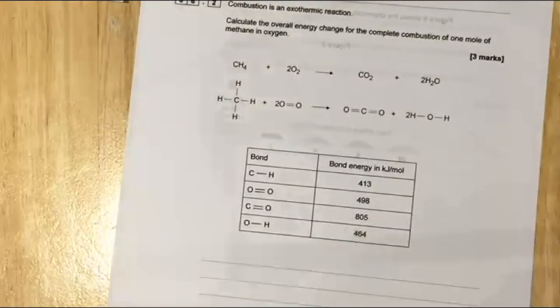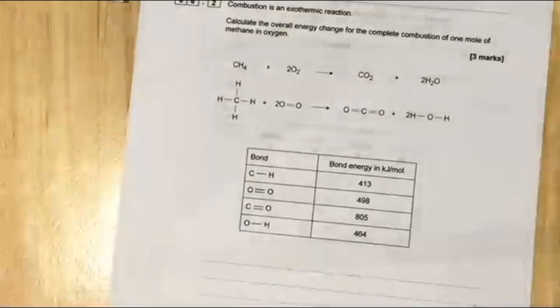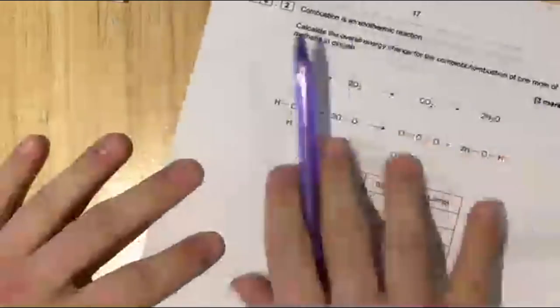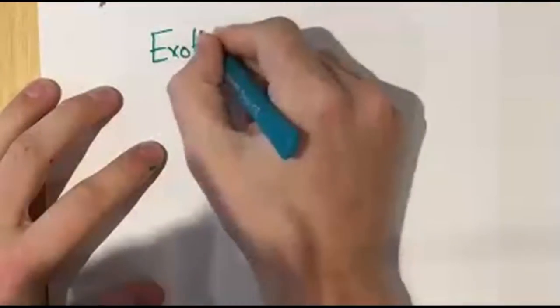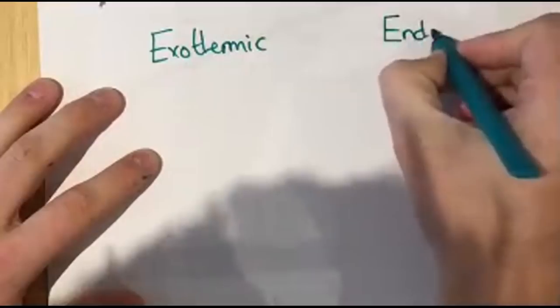Here's a past paper question I've prepared. We're going to switch to normal pens for these. This is a past paper question looking at energy change. Before we do, we need to make sure we're happy with energy changes. There are two types of reaction: you either have an exothermic reaction or an endothermic reaction.